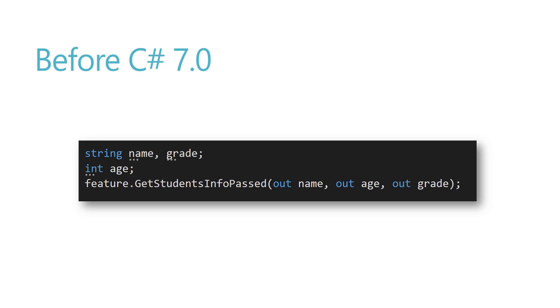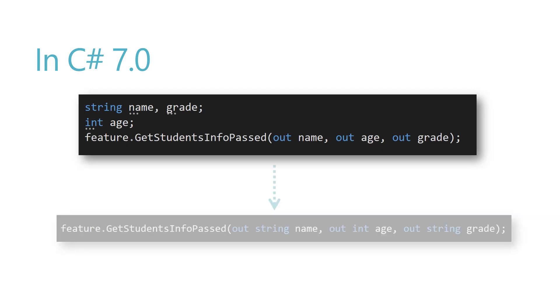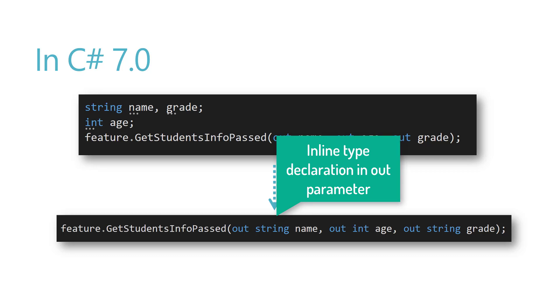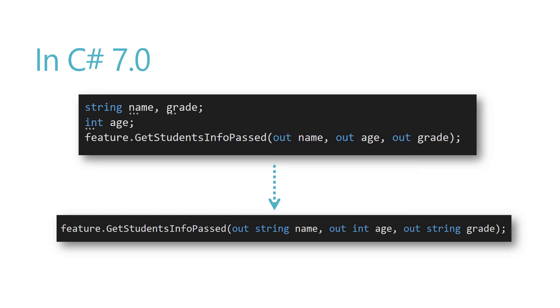C# 7.0 introduced a much more unified way of returning a value and initializing the out variable. Before C# 7.0, if you wanted to use out variables you needed to declare string name, string grade, and int age before passing them to the out parameters of a method — you'd see 'out name', 'out age', and 'out grade', but the variable declarations had to happen before the method call.